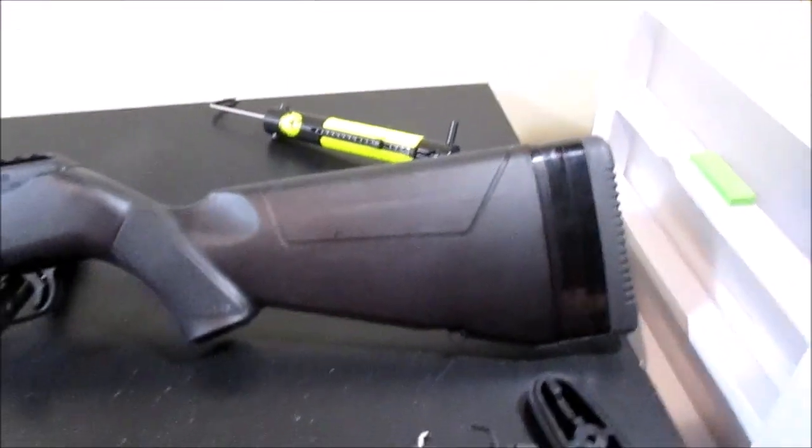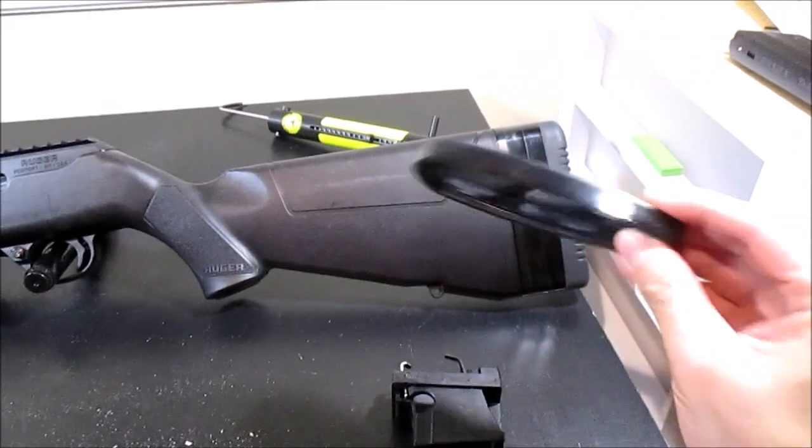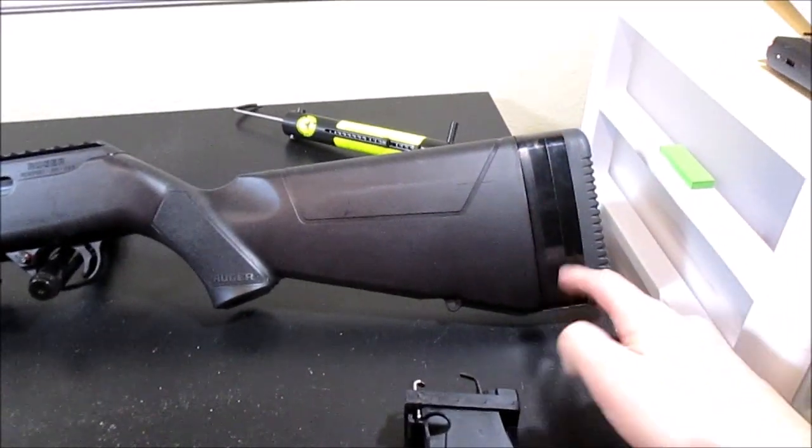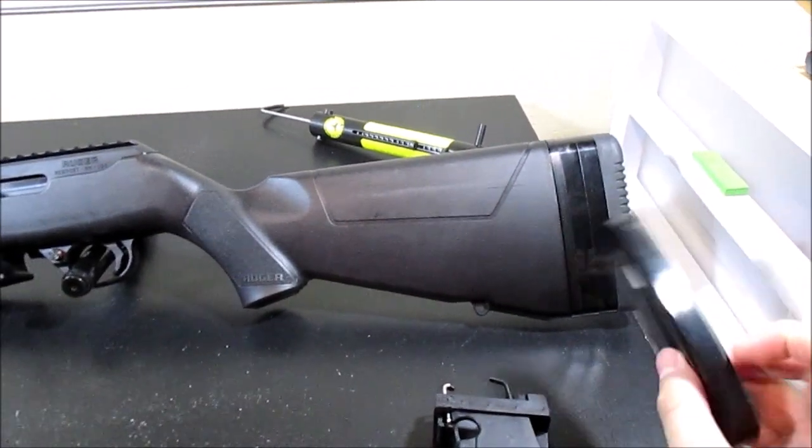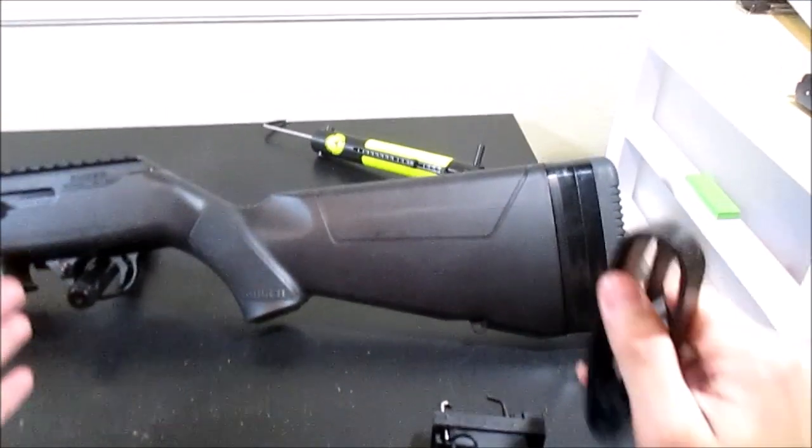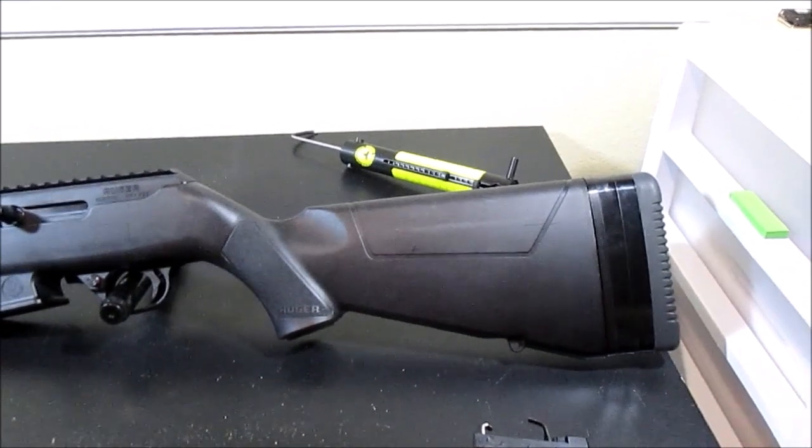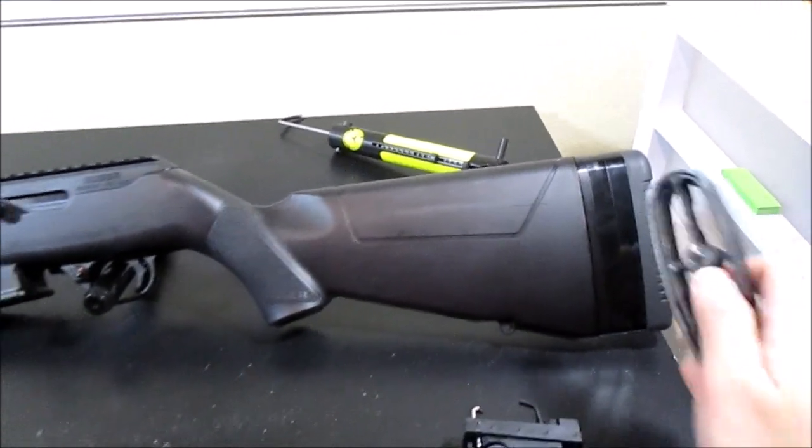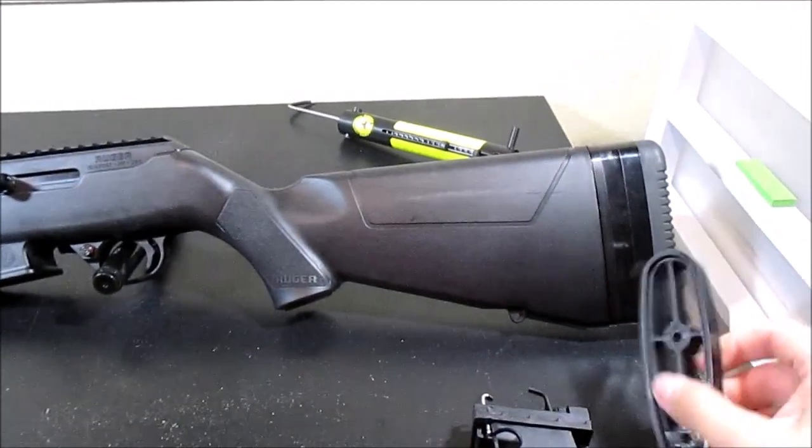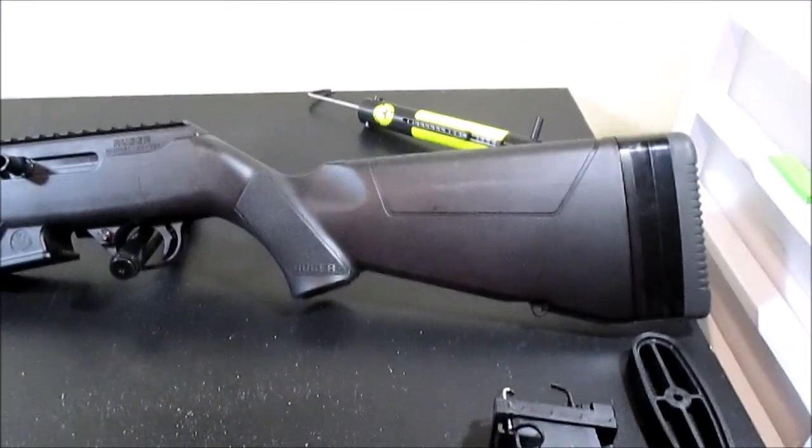So the rifle also comes with these spacers. I think it comes with one from the factory. I put one extra one to increase the length of pull. So I think it comes with someone of smaller frame in mind. And then you can add one or two more spacers and increase it for if you have longer arms.